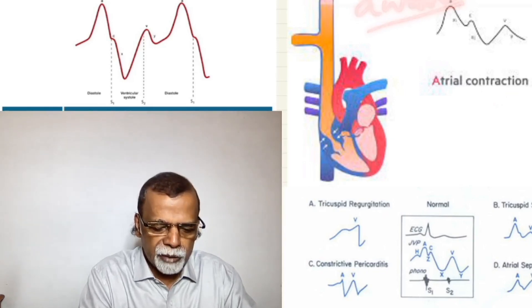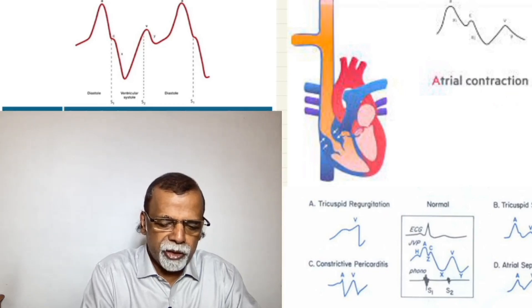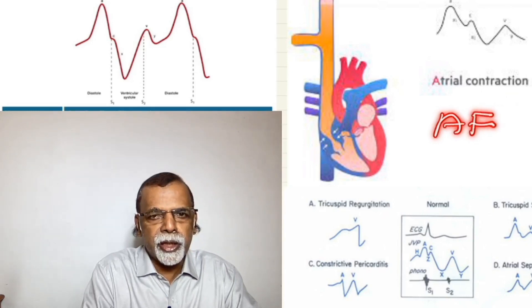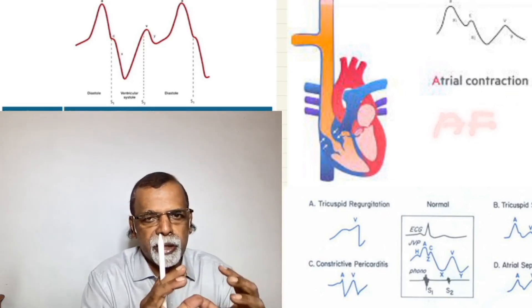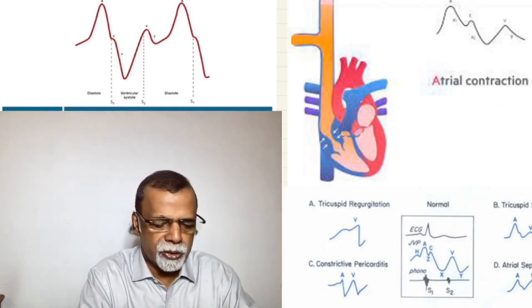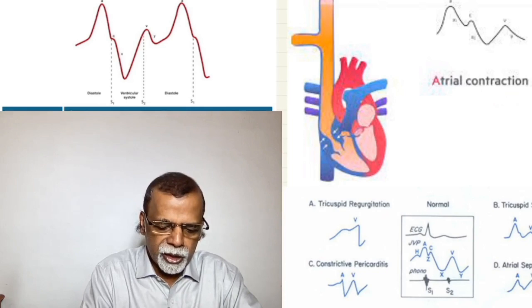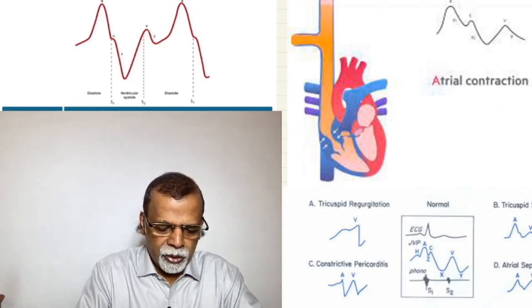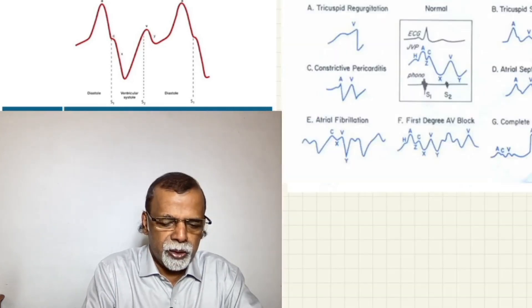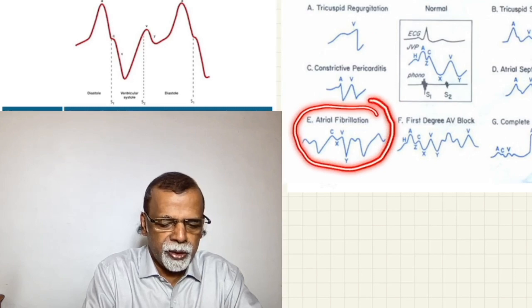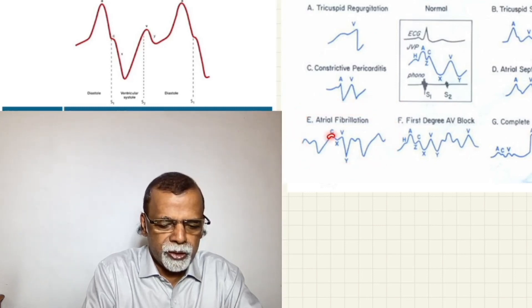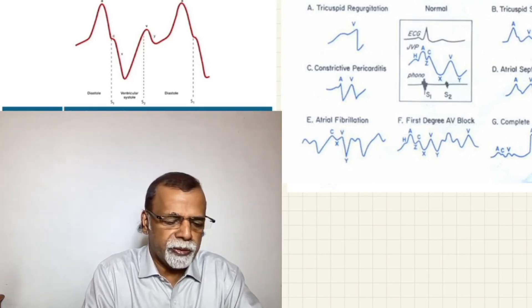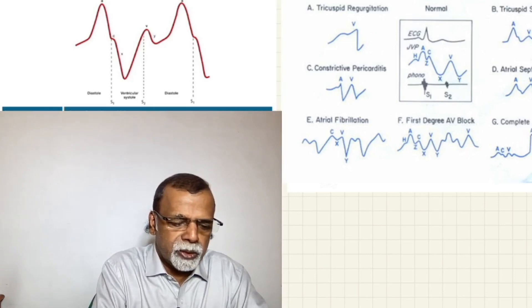The A wave can be absent. How can you get an absent A wave? When there is atrial fibrillation, the atria is not contracting — it is only fibrillating like a bag of worms with no effective contraction. There is no rise in pressure, so atrial fibrillation is a classical condition where you get absence of the A wave. In this tracing of atrial fibrillation, there is no A wave; only the C and V waves may be seen.